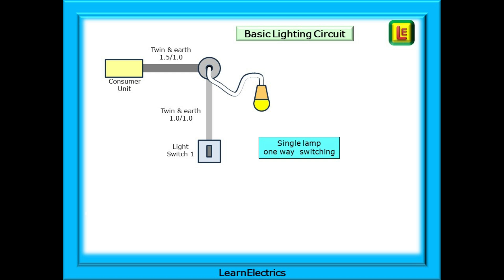We've shown here the basic one-way, one-light, one-switch configuration where we have the loop or feed cable going directly to the ceiling rose, usually in 1.5 by 1 millimeter twin and earth and a one millimeter twin and earth used as a switch cable.